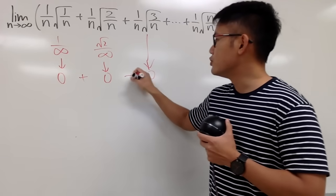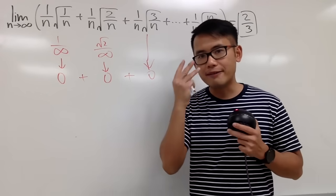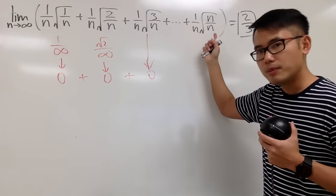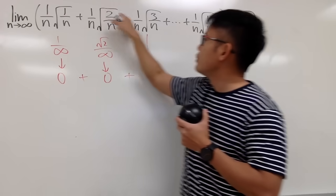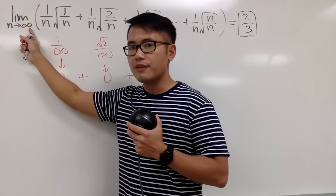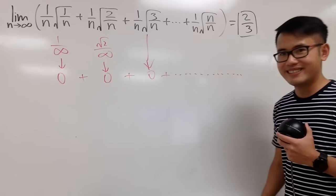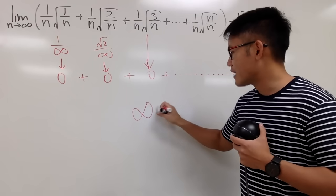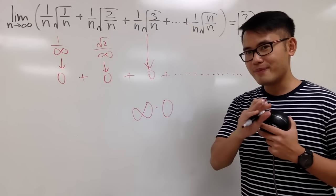And of course we are adding a bunch of this up. Yes, 0 plus 0 plus 0, if we only have 3 of them, this right here is equal to 0. But how many of these terms do we actually have? We actually have n terms, right? Because we have 1, 2, 3, up to n, we have n terms. And when n goes to infinity, in fact, we have infinitely many of these zeros. Can we draw any conclusion right here? No, right?